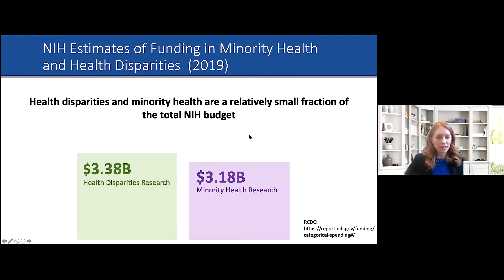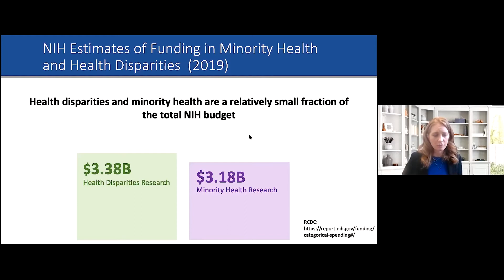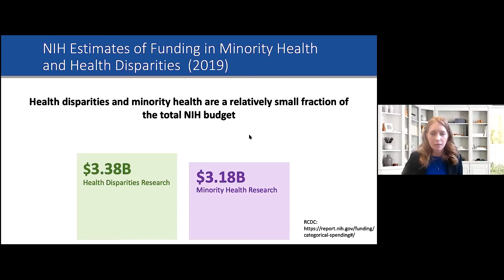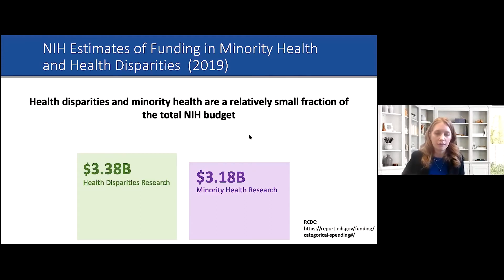NIH funds about $3.38 billion worth of health disparities research and about $3.18 billion for minority health research, based on 2019 data. These categories are not mutually exclusive in our reporter system, so something could be coded in both. Regardless, compared to the overall NIH budget which now stands at about $42 billion, these numbers represent a relatively small fraction of the total.